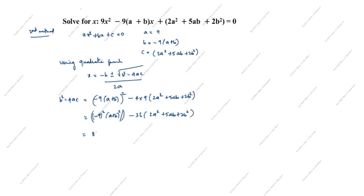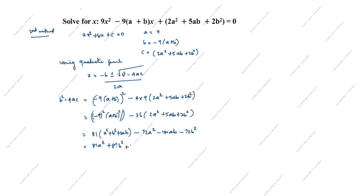Expanding: 81(a+b)² = 81(a²+b²+2ab) = 81a²+81b²+162ab. Expanding 36(2a²+5ab+2b²): 36×2 = 72a², 36×5 = 180ab, 36×2 = 72b². So b²−4ac = 81a²+81b²+162ab − 72a² − 180ab − 72b².